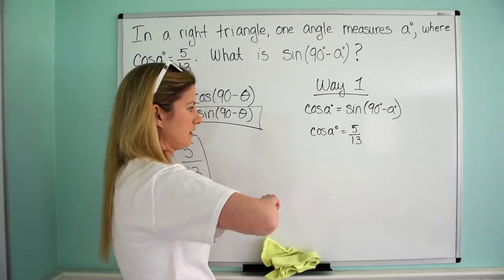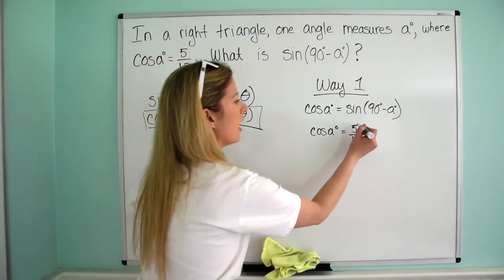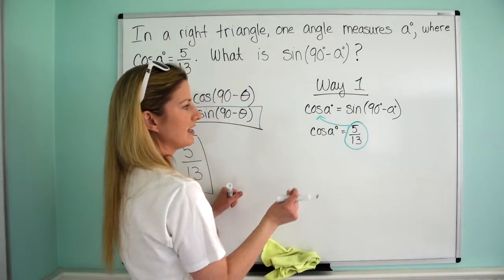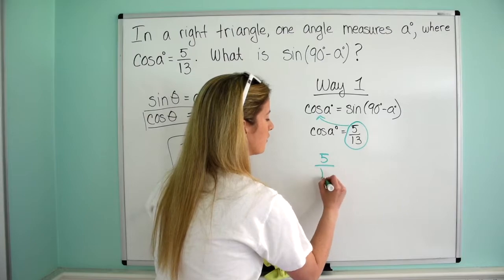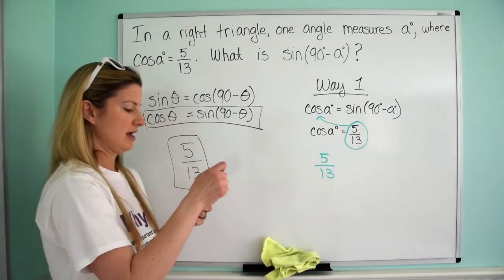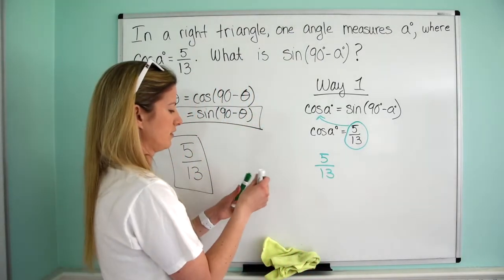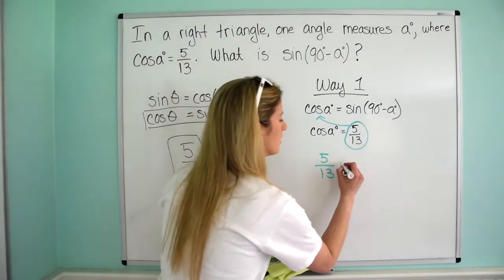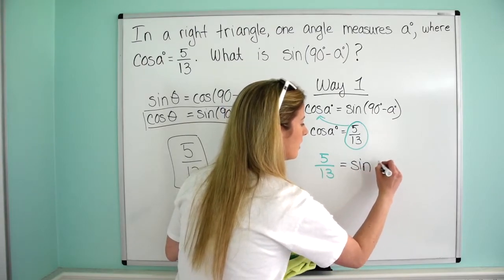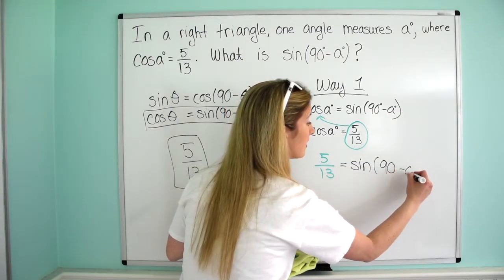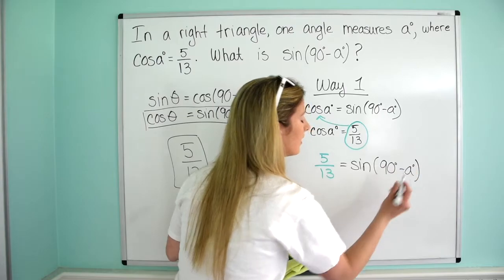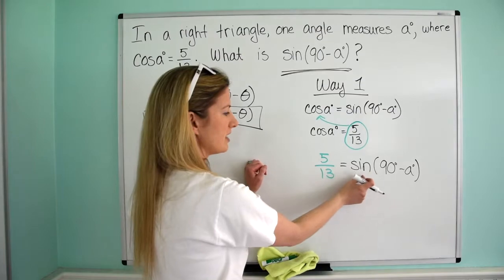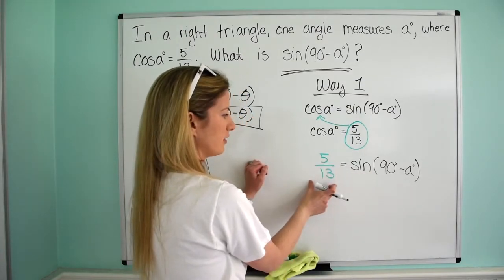I'm literally going to take this, and wherever I see cosine of A, I'm going to replace it with 5 over 13. So I get 5 over 13. I just replace cosine of A with 5 over 13, and that's going to equal the sine of 90 minus A. And if we look, that's what the question was asking. What is the sine of 90 minus A?